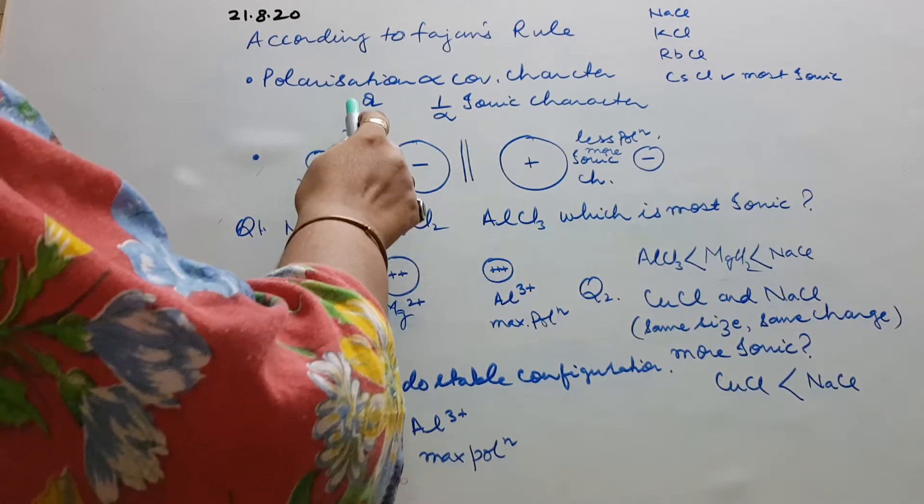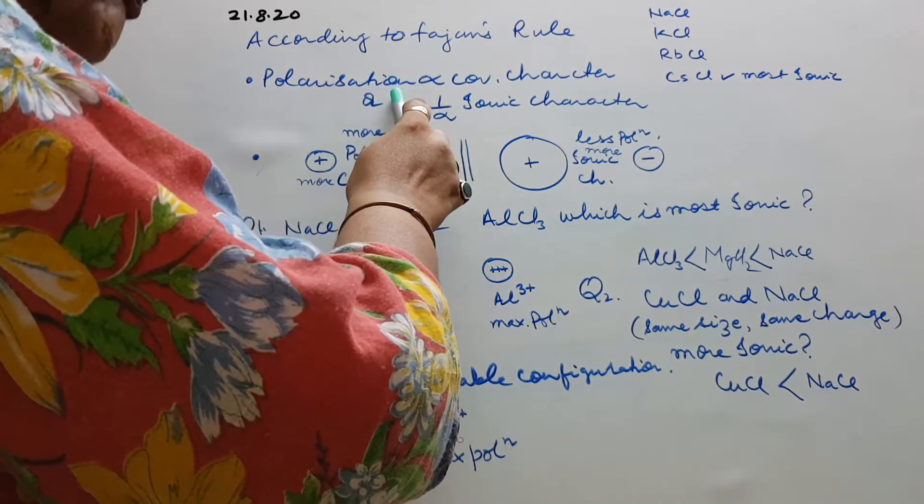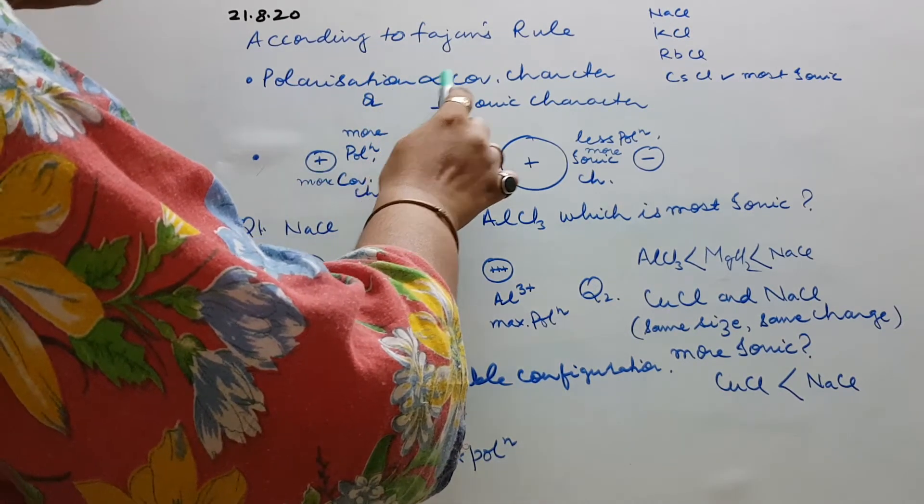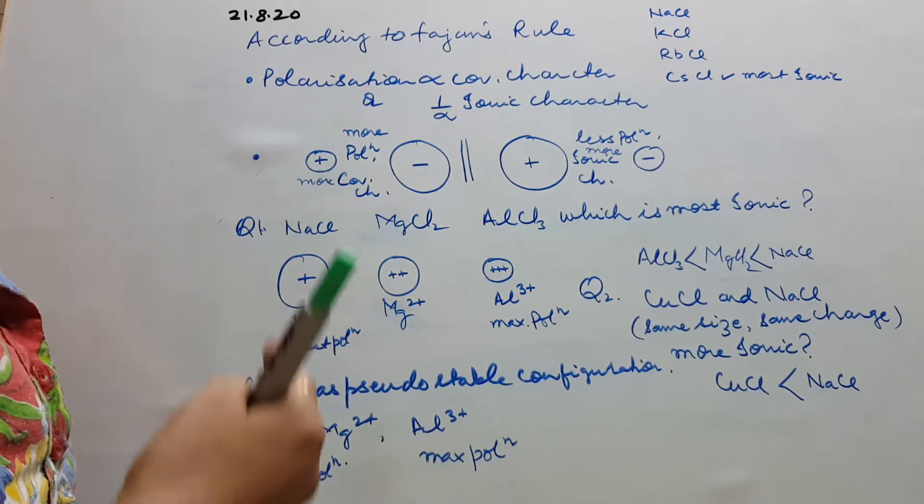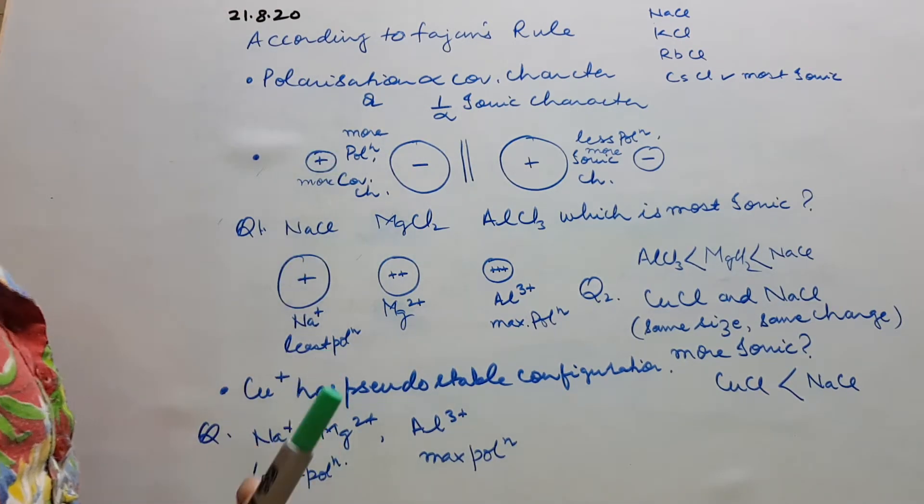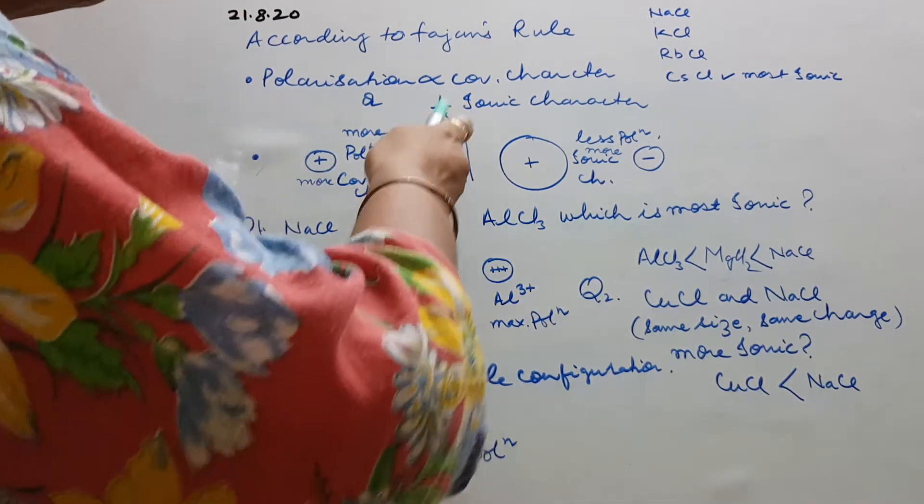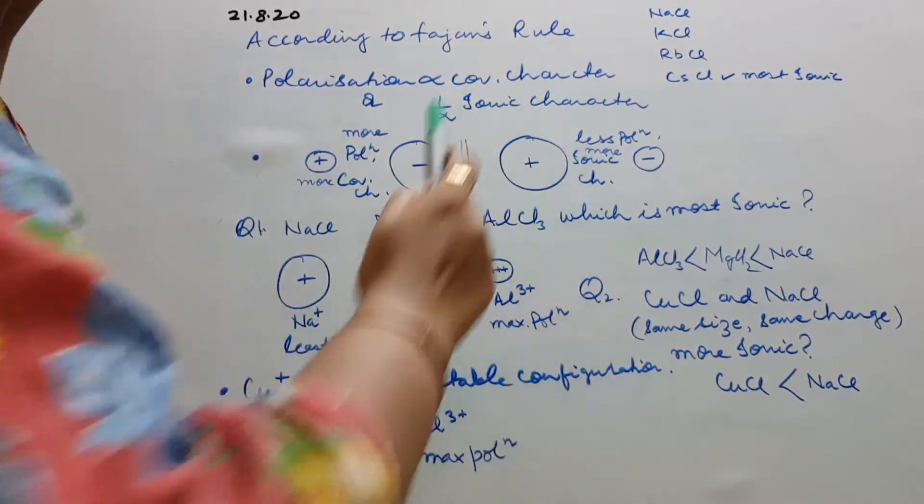According to Fajan's rule, polarization is directly proportional to covalent character. More the polarization, more will be the covalent character, and obviously lesser will be the ionic character.